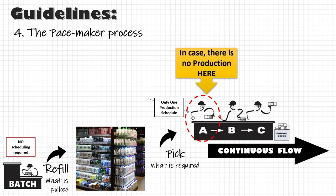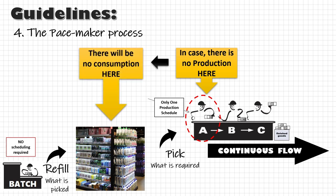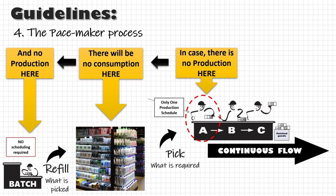For example, if you stop producing at the pacemaker process, the supermarket at the pacemaker process will not get consumed, and the upstream process will not receive empty bins or Kanbans — so they will not produce either.